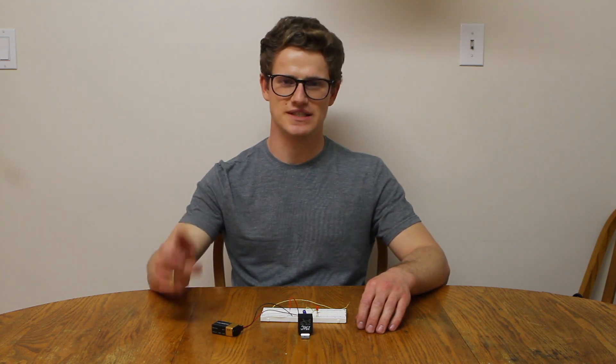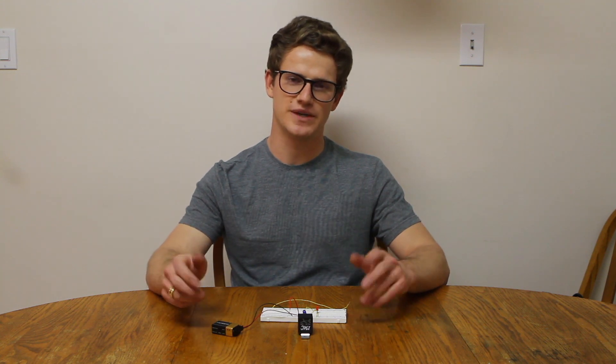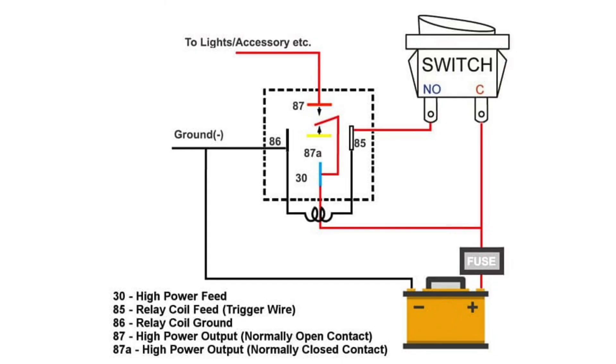First we're going to look at a schematic about the wires that make the connections between your existing bike and battery to the new relay you're going to add. Looking at the relay diagram you can see we have an inline fuse coming off the battery positive leading to both the switch and pin 30 on the relay.